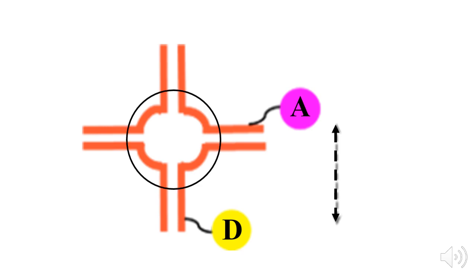To monitor the changes in structure, we use Forster Resonance Energy Transfer, or FRET, and attach fluorescent dyes to the 5' ends of two of the junction arms.